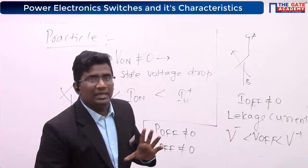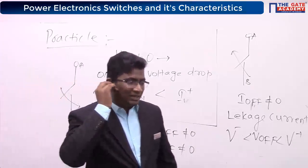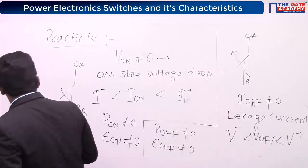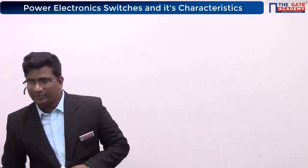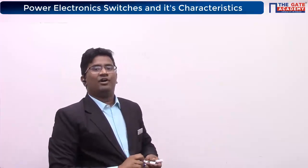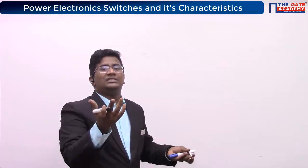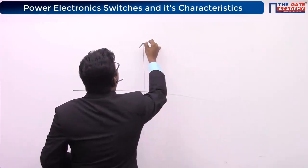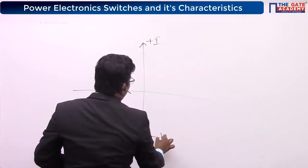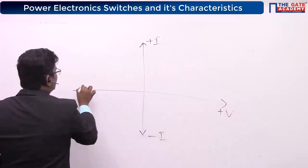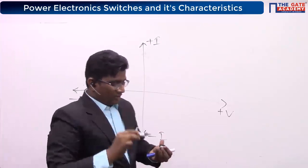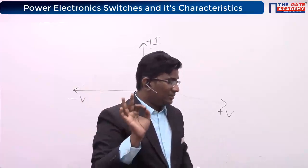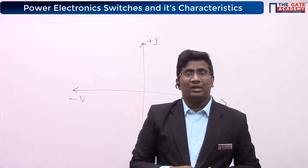Now I will show you the safe operating area — where you need to operate this particular switch. The safe operating region tells you at which instant you have to operate your switch. This is my current on one axis and voltage on the other axis. Is power loss a finite value or zero?